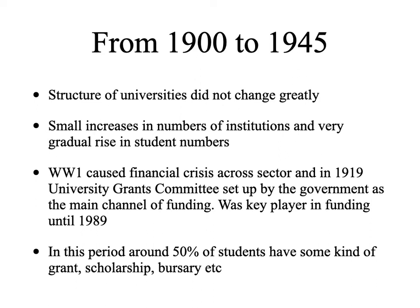The Grants Committee was to be a key player in the funding of universities for the next 70 years. Its foundation at the end of World War One, to help prop up the failing finances of the sector, was a critical step. Although there was very limited state funding, through various sources, some 50% of the very small number of students attending university at the time did have some kind of access to grants, scholarships, and bursaries — often provided by philanthropists and by the universities through their own resources and wealth. But it did mean that there was some opportunity for a small number of people to attend university without having access to the family resources that would otherwise have been needed.